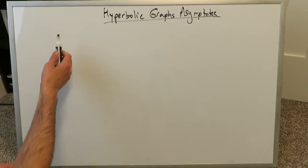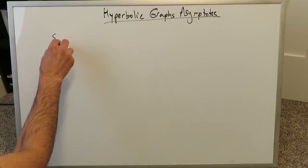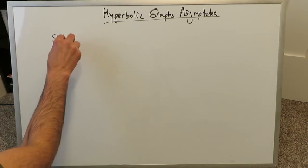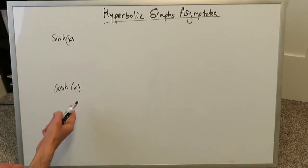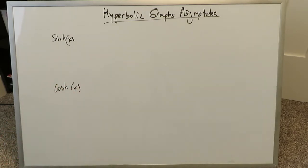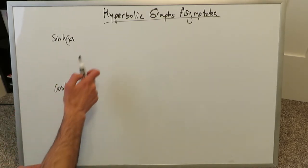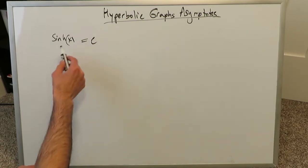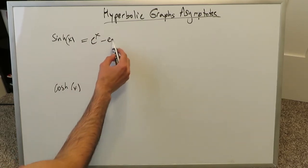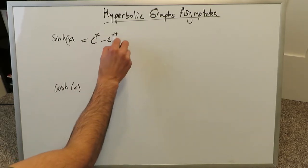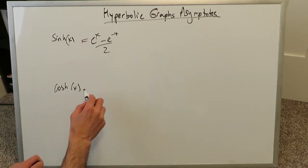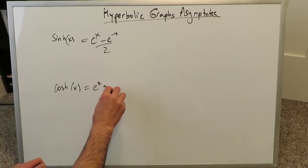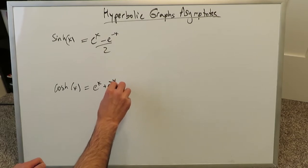We'll start with the two of the easier graphs, which are sinh(x) and cosh(x). None of these have any asymptotes of any kind, simply because in terms of their rational functions: sinh(x) is equal to (e^x minus e^(-x)) over 2 — that's the hyperbolic sine — and the hyperbolic cosine is (e^x plus e^(-x)) over 2.